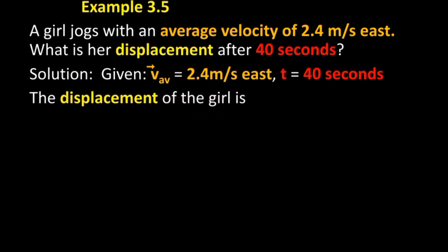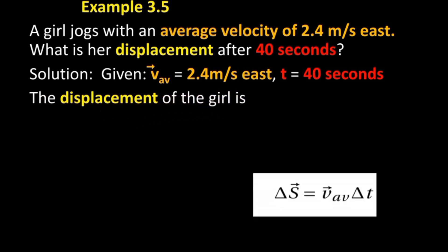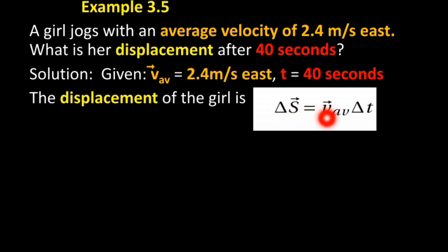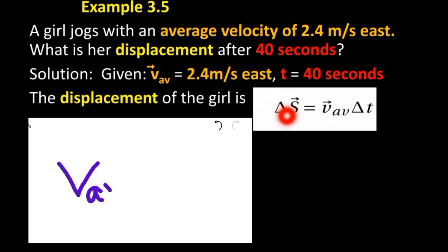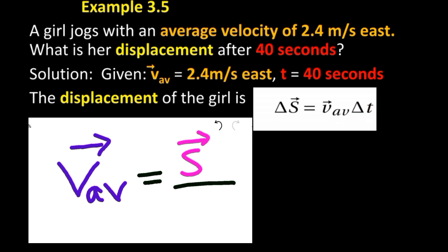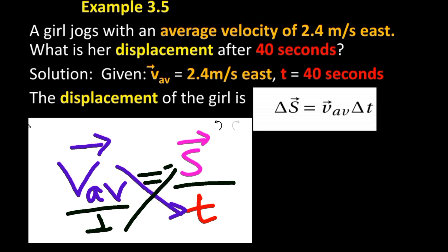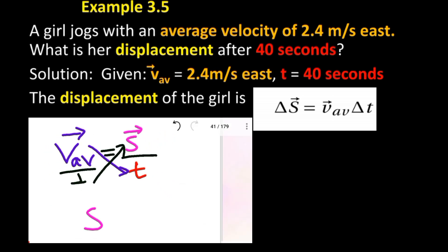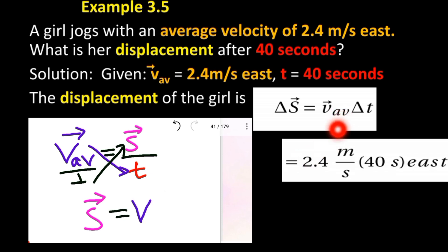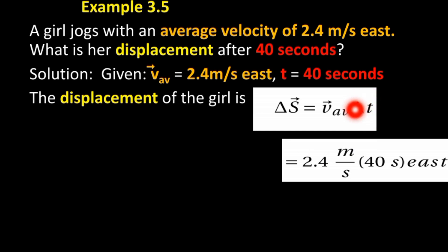The displacement of the girl equals average velocity multiplied by time. That is 2.4 meters per second times 40 seconds.